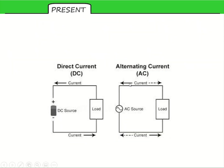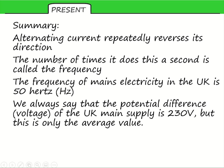In England that change of direction happens 50 times a second. So an alternating current constantly changes direction and size, whereas from a battery you get a steady current in a single direction. To sum that up: AC — alternating current — repeatedly reverses direction continuously. The number of times it does that in a second is called the frequency, and in the UK that is 50 times a second, so 50 hertz.